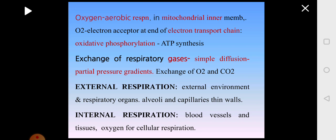This oxygenated blood is carried to the heart from where it is distributed to every cell of the body, where the cells will be using oxygen and cellular respiration will happen where the synthesis of ATP will take place. This will become internal respiration. External respiration is exchange of respiratory gases oxygen and carbon dioxide between the atmospheric air and the alveoli. Internal respiration is exchange of the respiratory gases between the blood vessels supplying the cell and the cell itself. Oxygen enters into the cell and carbon dioxide from the cell leaves and enters the blood vessel. This will become internal respiration.